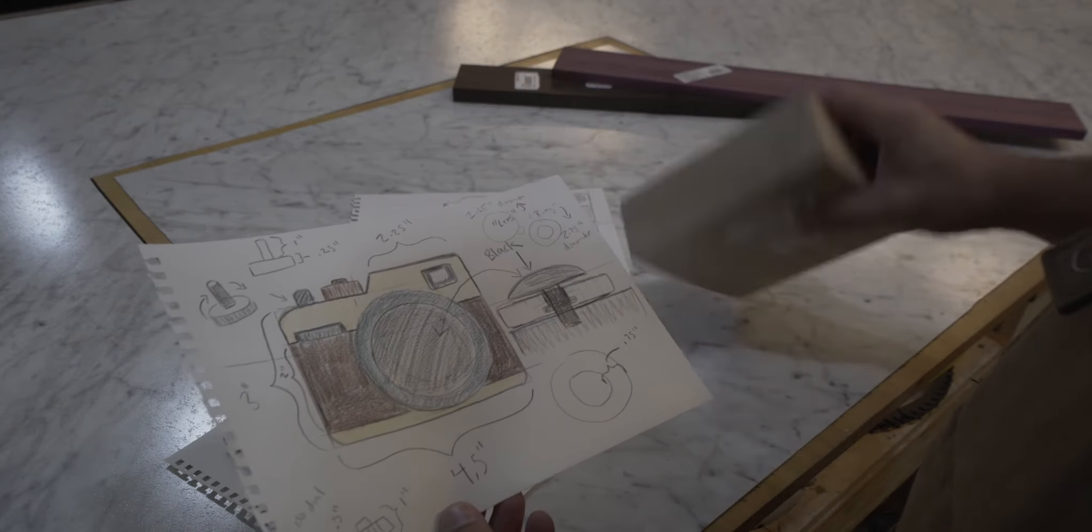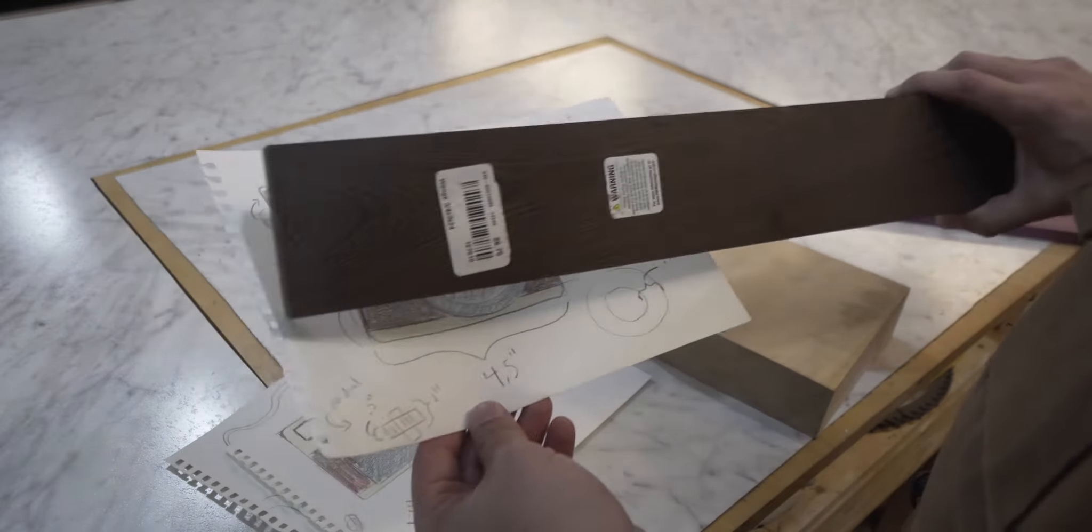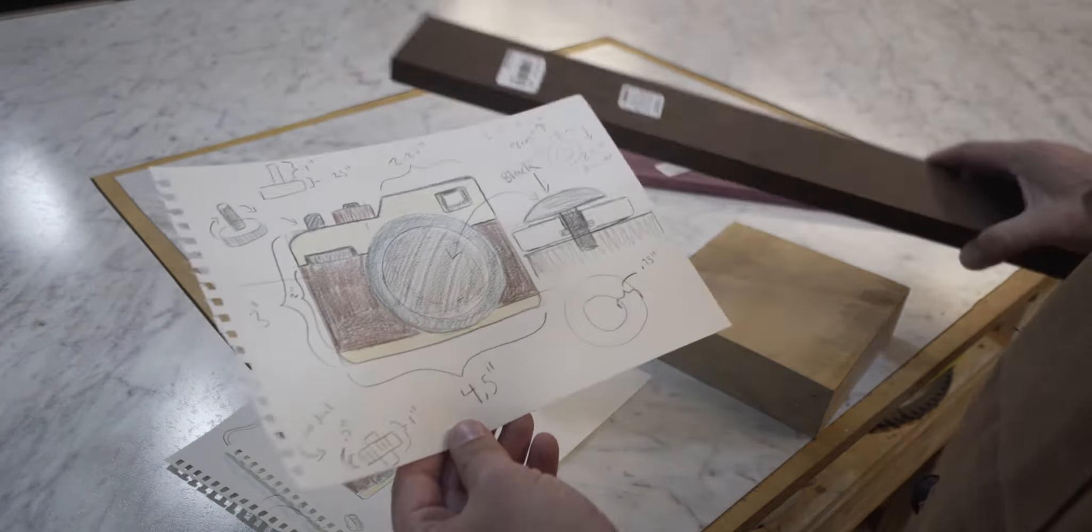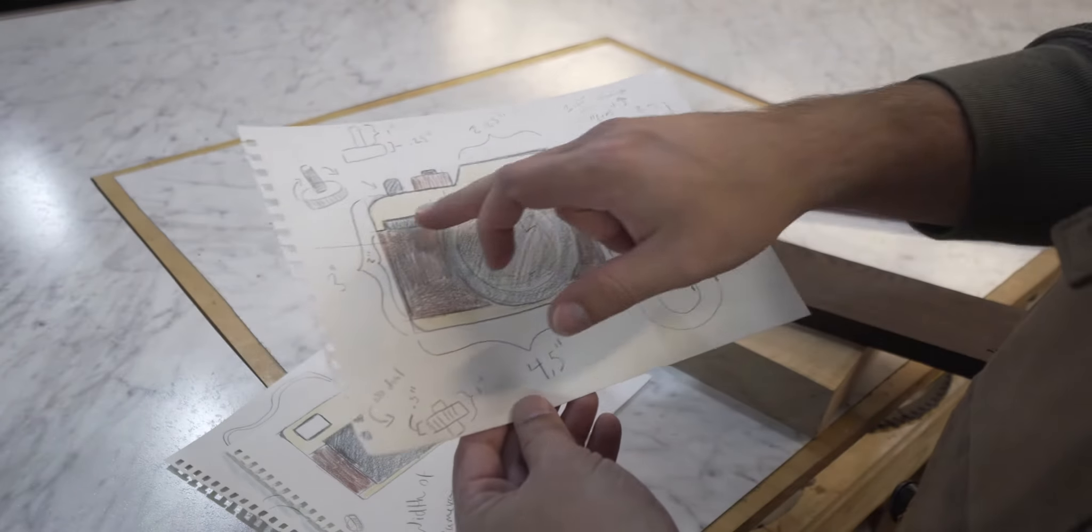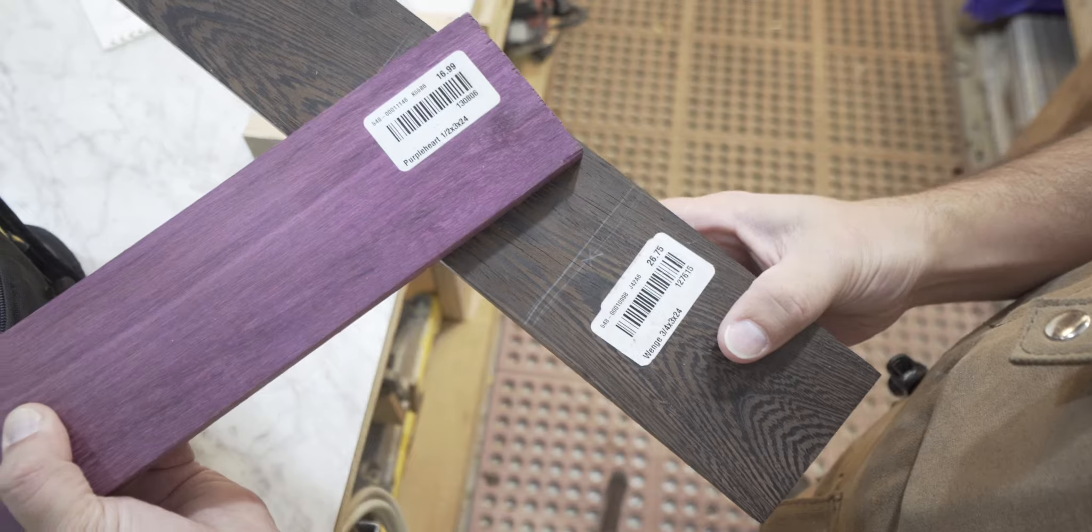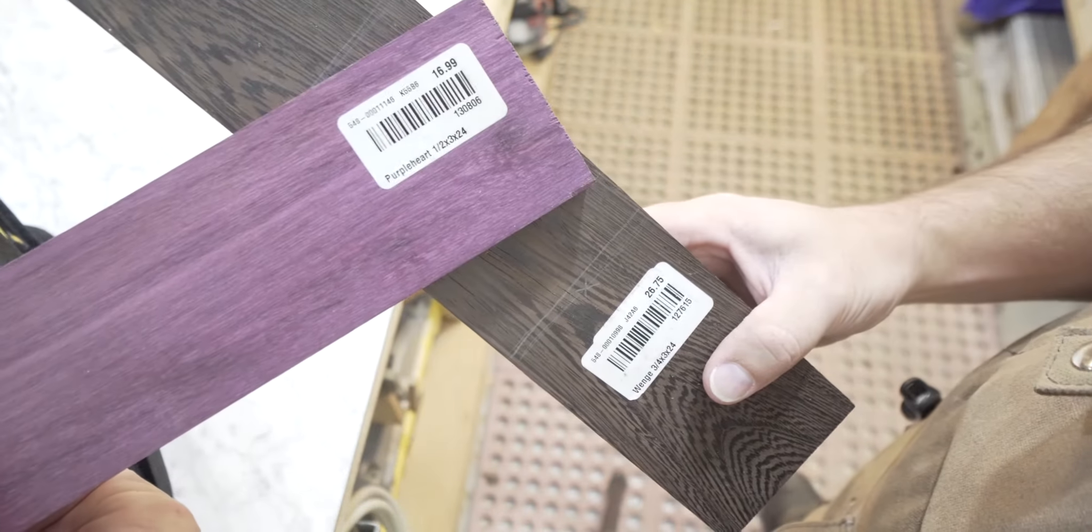Sycamore for the body part, wenge for where the leather grip would be, a much darker piece, and then for the highlights, the fun parts, because this is a toy camera, we got purple heart which is a nice hardwood and it's a really vibrant color. So that should make it look pretty fun.